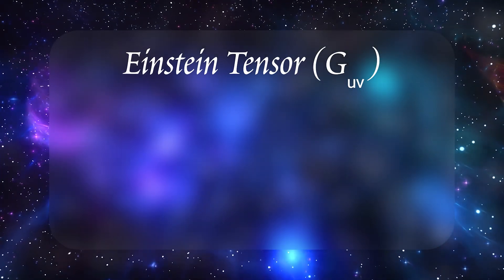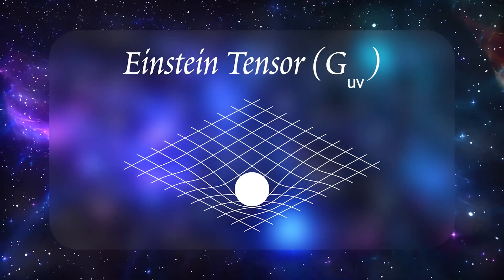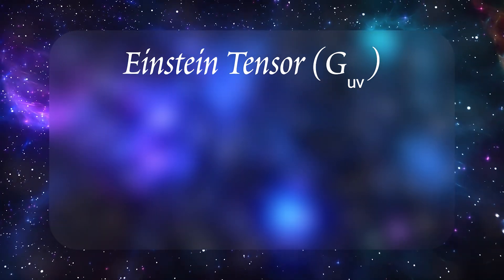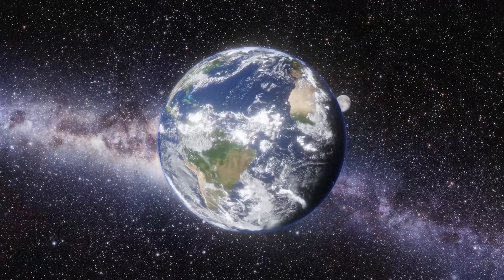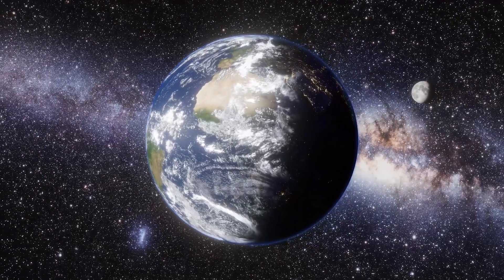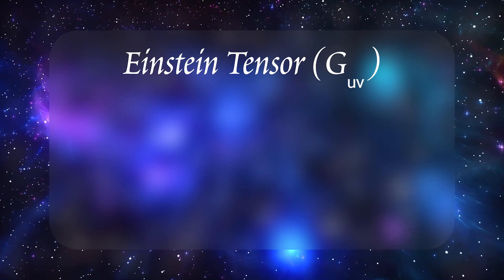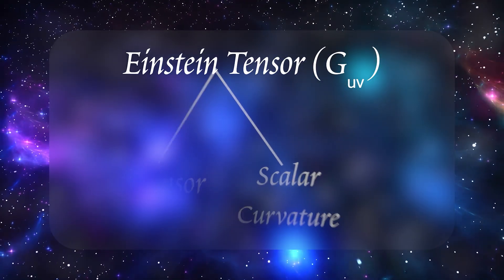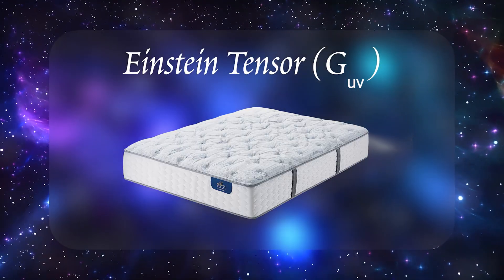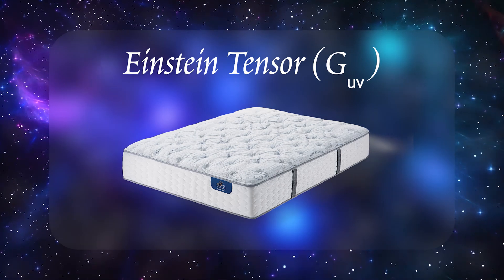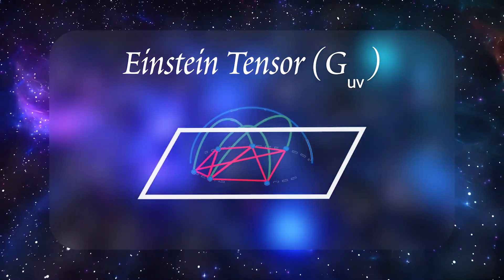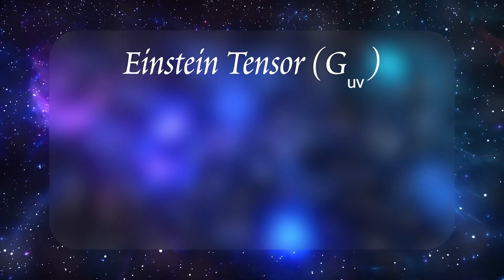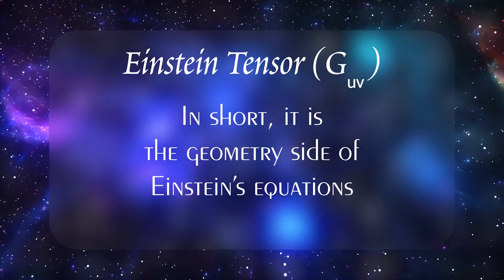Think of it as a compact summary of how spacetime is curved. We know from previous discussions that curvature means distances, angles, and geodesics don't behave the way they would in a flat world. But to predict orbits or gravitational lensing precisely, we need a single mathematical object that combines all those aspects of curvature into one coherent measure. The Einstein tensor is exactly that. It's built out of more fundamental curvature quantities, like the Ricci tensor and scalar curvature, and does two big jobs. First, it tells us how volumes or areas might get squeezed or stretched in different regions. Second, it ties that local squeezing or stretching effect to the geometry at every point, ensuring consistency across the manifold. In short, the Einstein tensor is the geometry side of Einstein's equations.